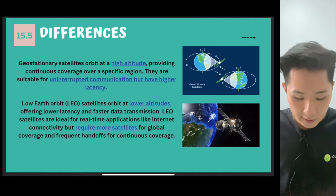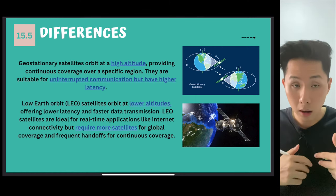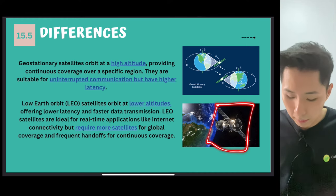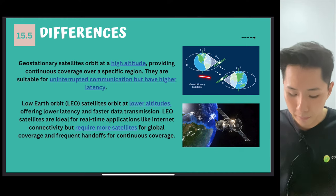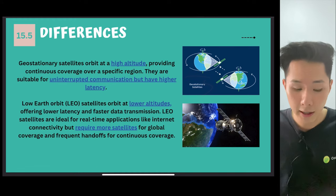Whereas in the low earth orbits, because they travel at low altitude, they cannot cover the whole earth. Therefore, we need many of them as compared to geostationary satellites. So these are just some pros and cons of both types of satellites.